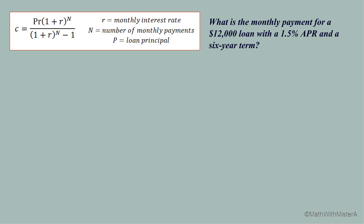For our first example we're going to figure out the monthly payment for a $12,000 loan with a 1.5% annual percentage rate and a six-year term on the loan.